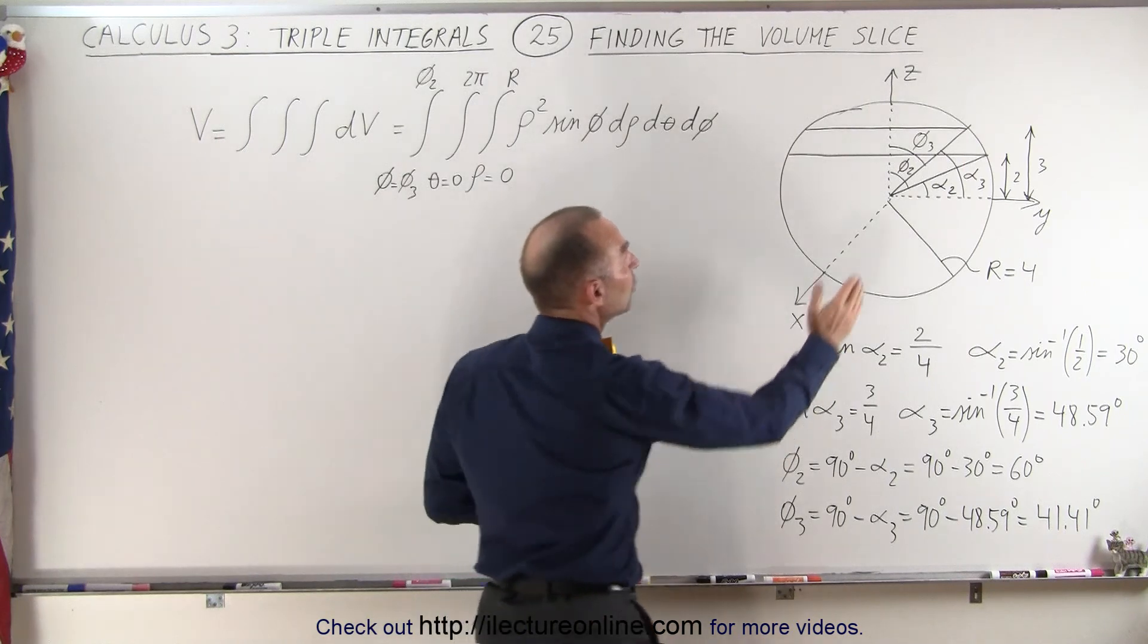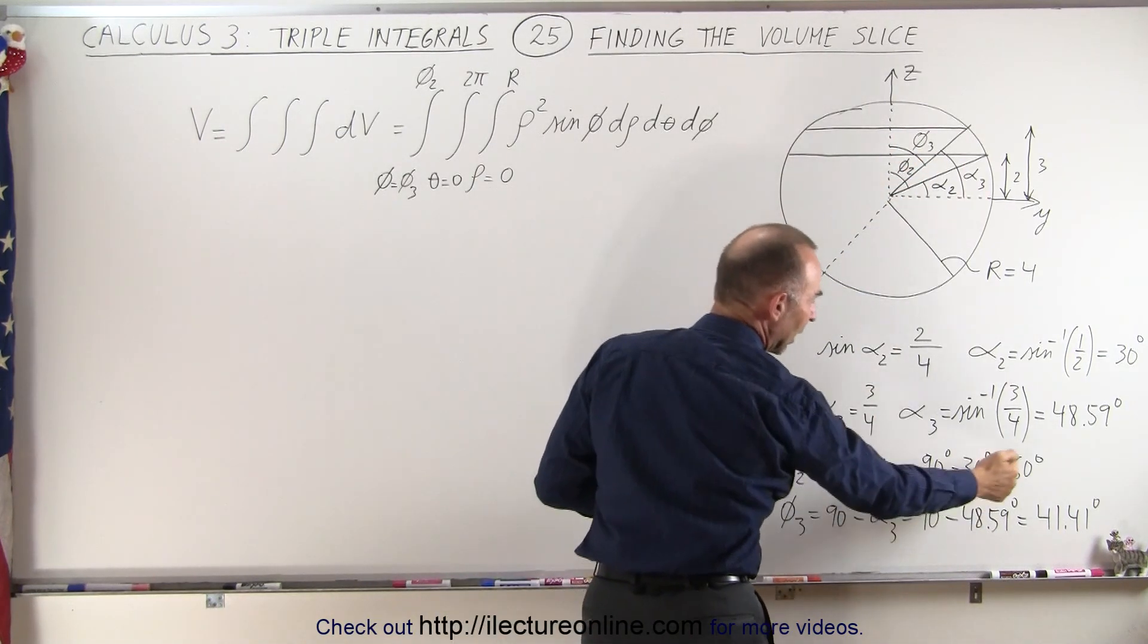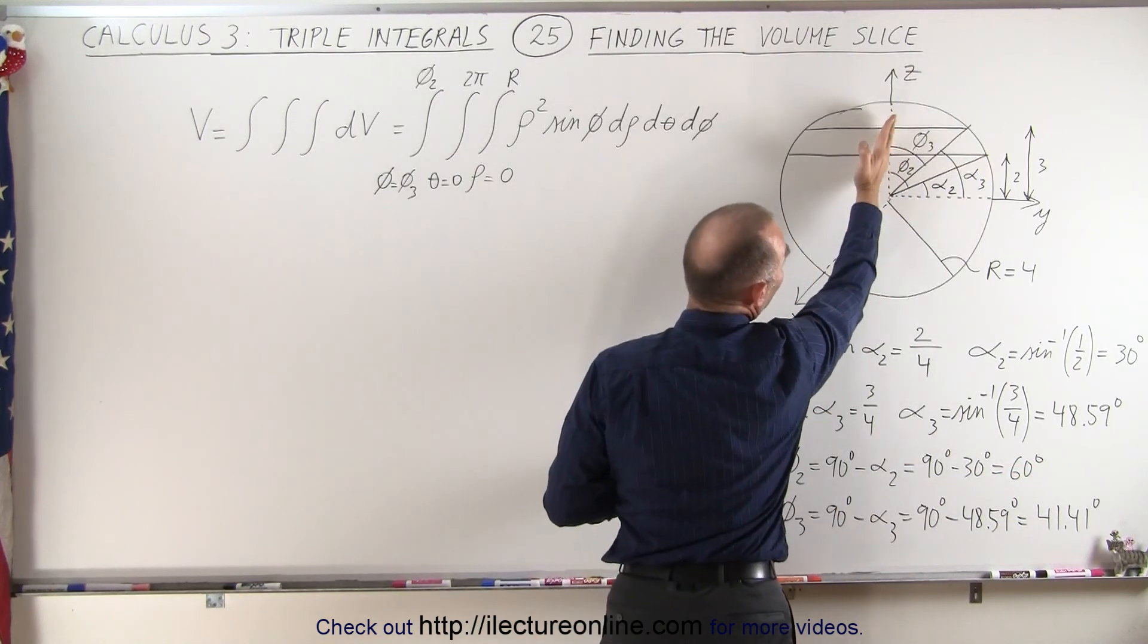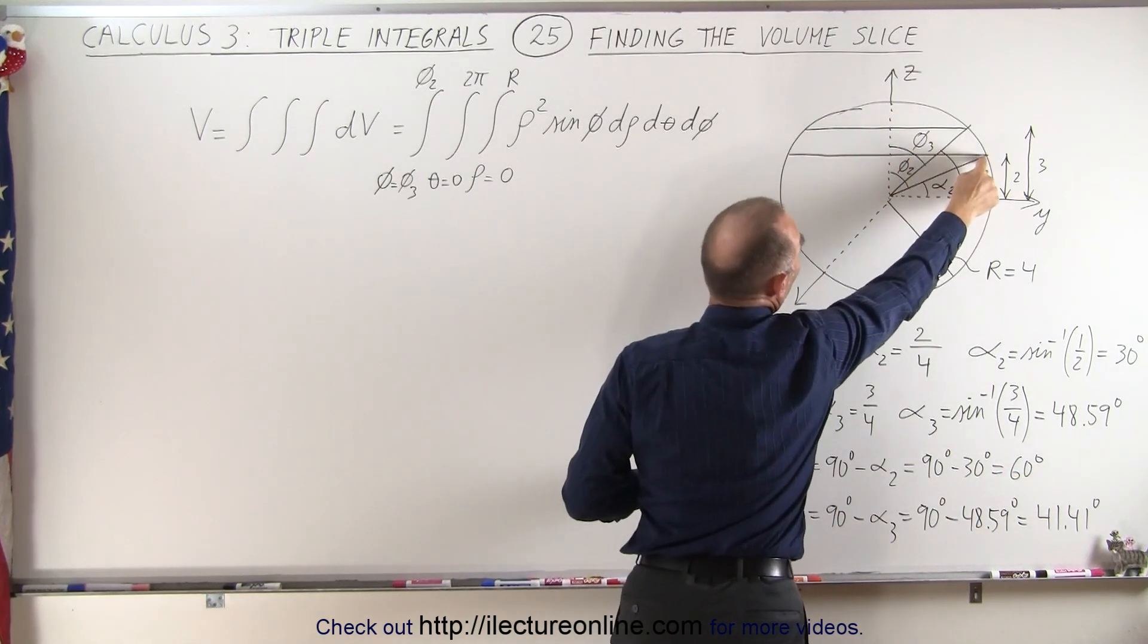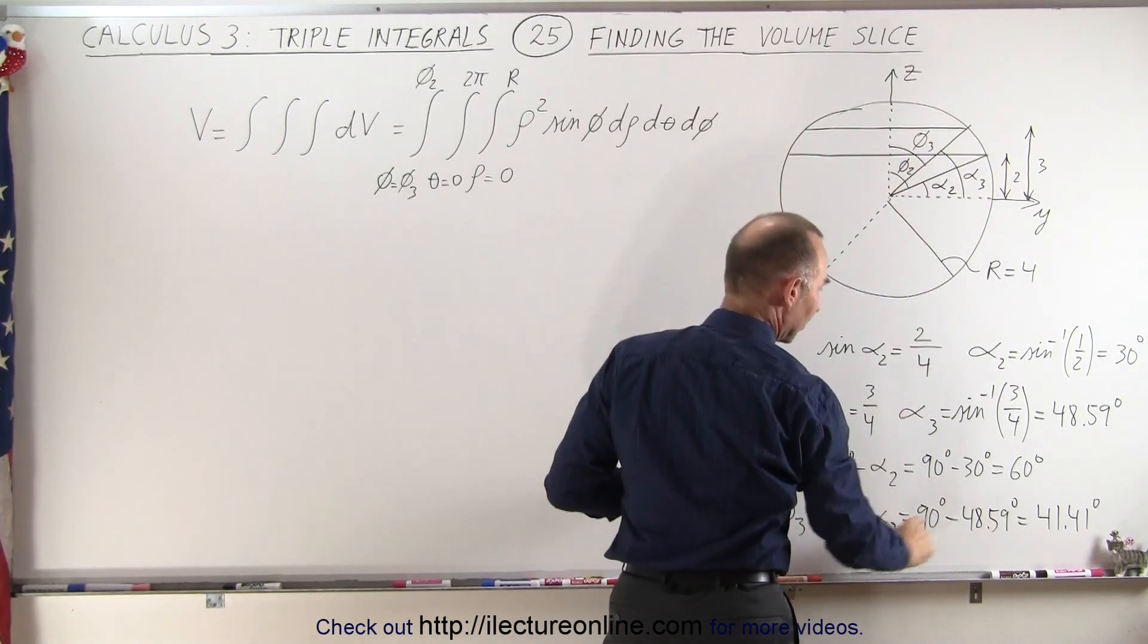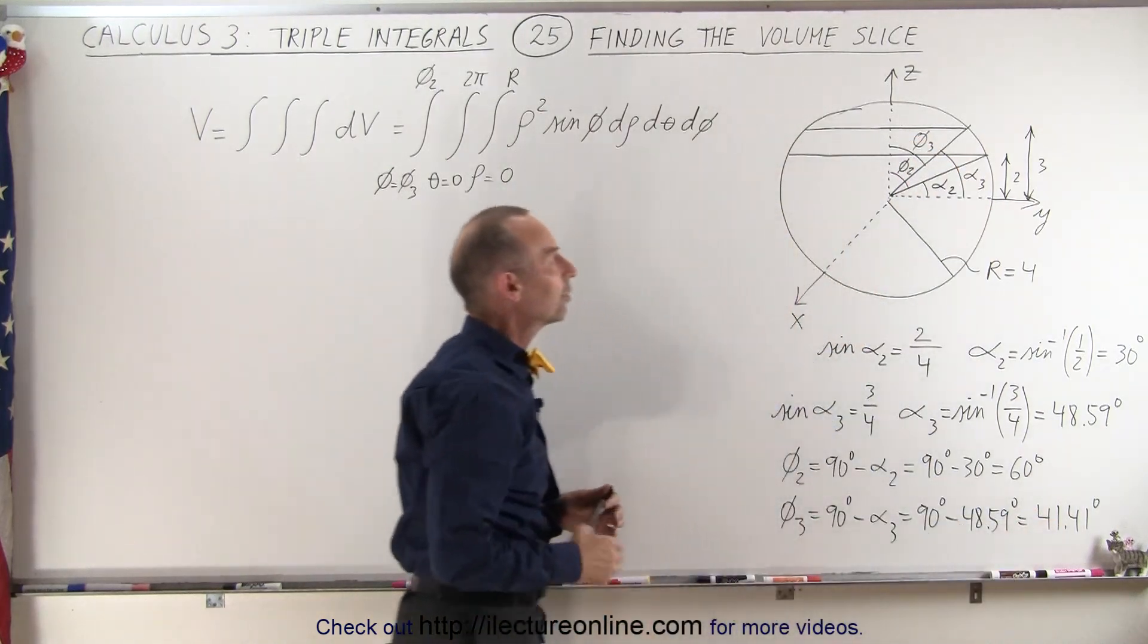Then in reference to the angle phi, we take 90 minus those angles and we find the angle phi 2, which is the angle from the z-axis to this point right there. That angle phi 2 is equal to 60 degrees and phi 3 is equal to 41.41 degrees.